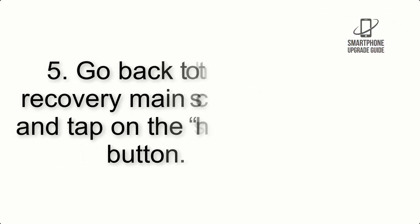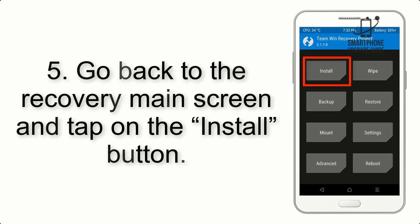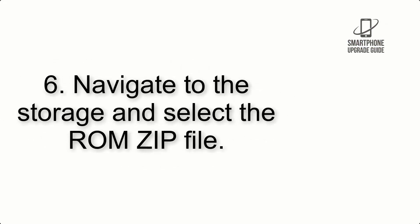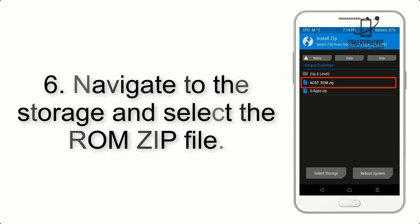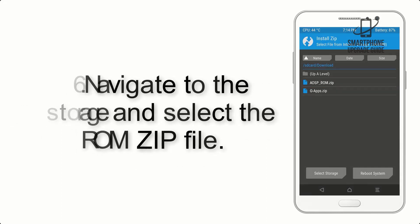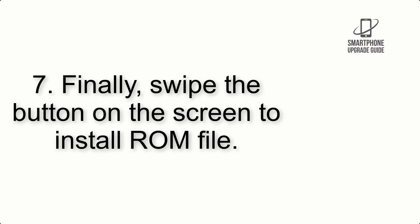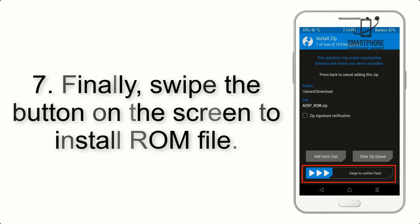Step 4: Swipe the button to wipe the device. Step 5: Go back to the recovery main screen and tap on the Install button. Step 6: Navigate to the storage and select the ROM zip file.